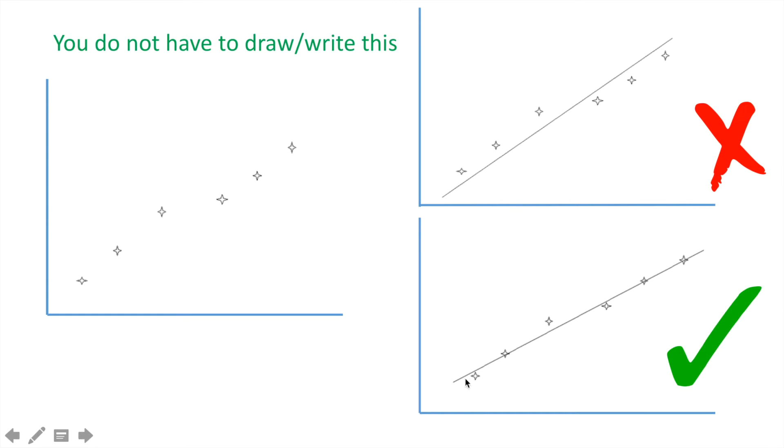If you drew a line that looked more like this, this would be correct. Because the points are pretty linear, taking two points that are far away from each other, and then drawing a line that connects these two points, would create a more true representation of the slope and the trend of the data.